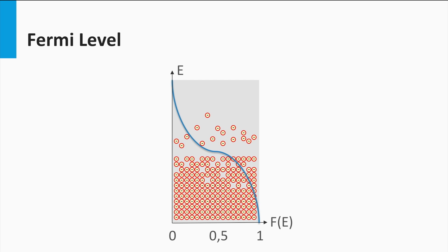Low in the valence band this function is equal to 1, whereas high in the conduction band this function is equal to zero. Note that this equation is only valid for a material that is at thermal equilibrium, which means that no additional energy is coupled into the system by electrical biasing, light absorption, or heat conductivity. The Fermi level represents the energy level at which the electrons have a 50% chance to occupy the energy level at any given time.